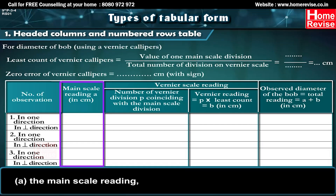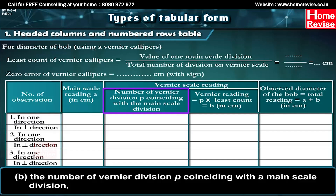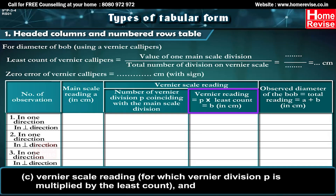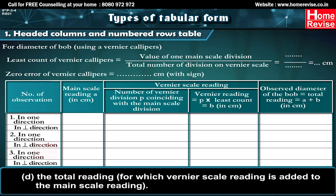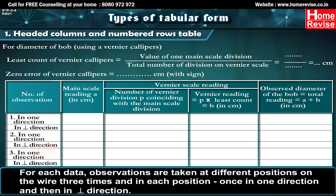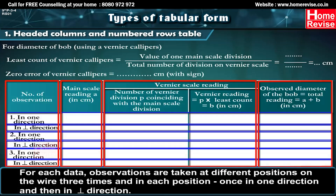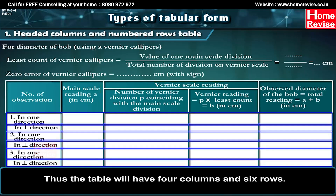Example: While measuring the diameter of the bob with vernier calipers, we record four data items — A: the main scale reading, B: the number of vernier division p coinciding with the main scale division, C: the vernier scale reading, for which vernier division p is multiplied by the least count, and D: the total reading, for which the vernier scale reading is added to the main scale reading. Observations are taken at different positions three times, once in one direction and then in the perpendicular direction. Thus the table will have four columns and six rows.